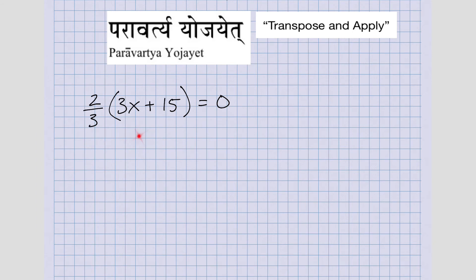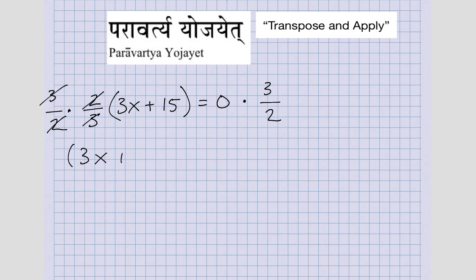Here we have two thirds times three X plus 15 equals zero. To transpose and apply, the first thing we need to do is get rid of this fraction, this two over three. The easiest way to do that is to multiply both sides by three halves — whatever you do to one side, you have to do to the other. What that does is it cancels it out, and what we're left with on the left is three X plus 15 equals zero, since any number times zero equals zero.